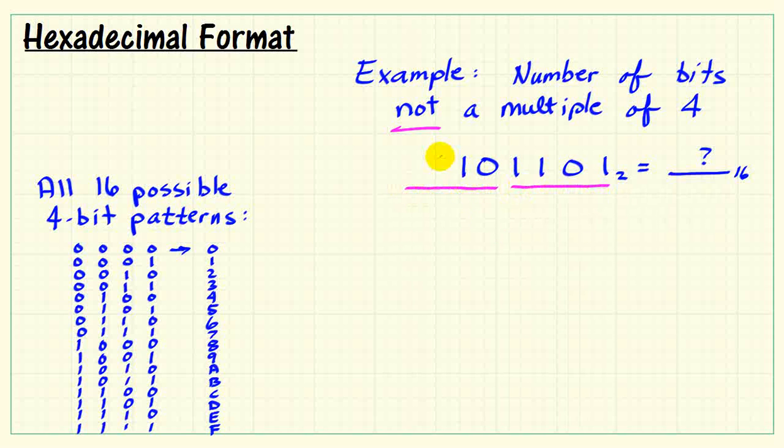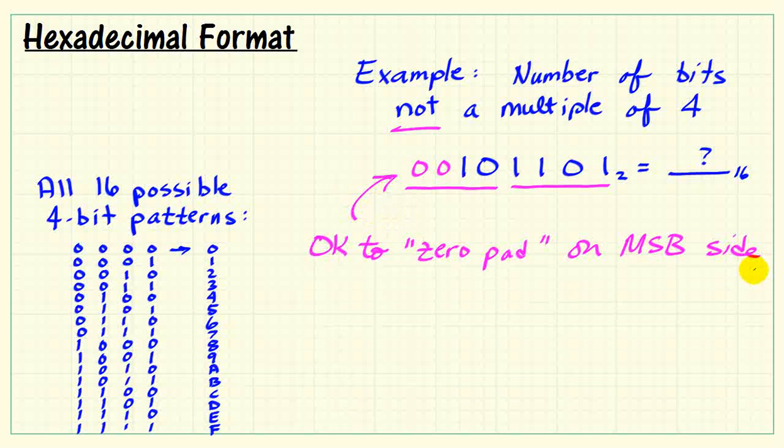So, instead, we always start our grouping at the right or LSB side. And it's not a problem to add 0s on the MSB side or on the left side. We can find that pattern pretty readily. That would be 2. This one down here looks like it has the value D. So, this 6-bit binary pattern when interpreted in hexadecimal format is 2D.